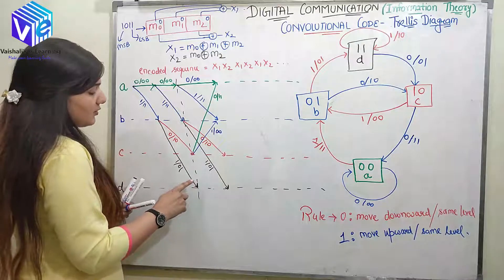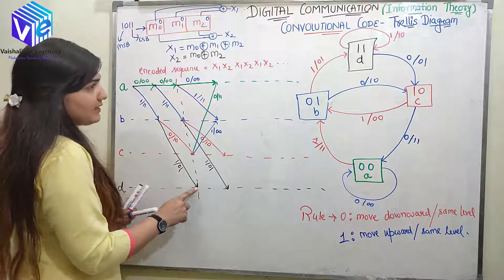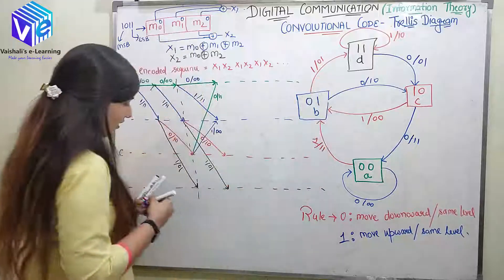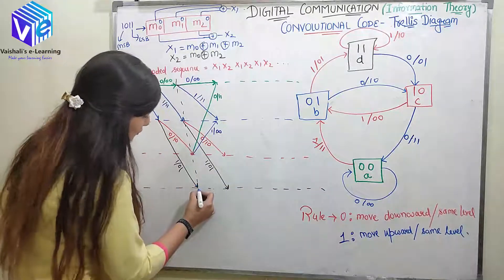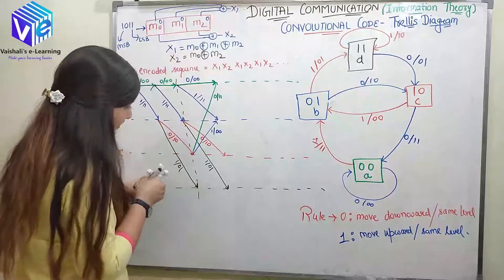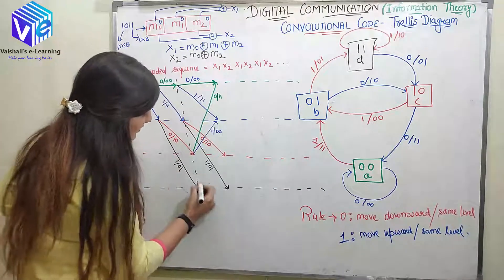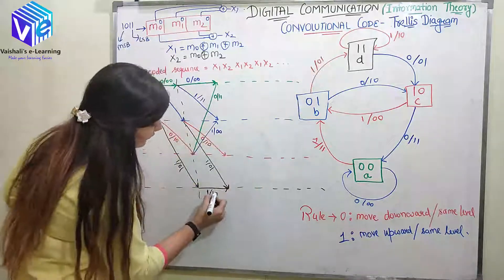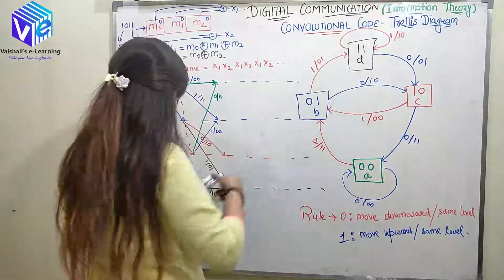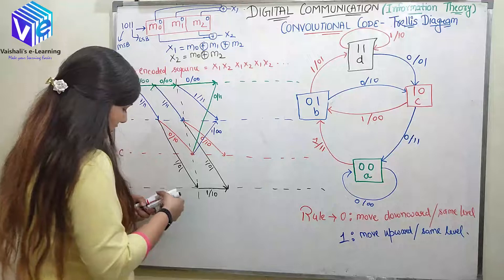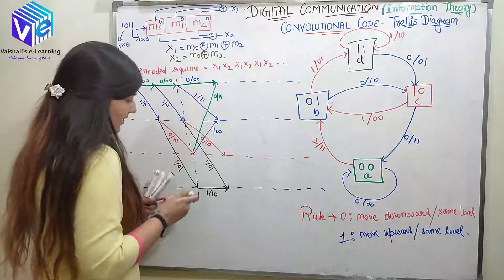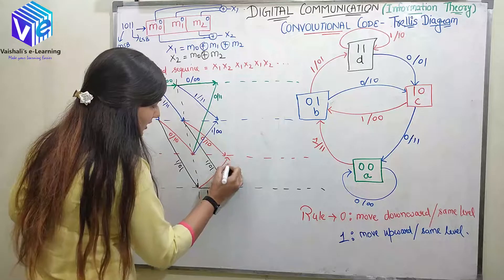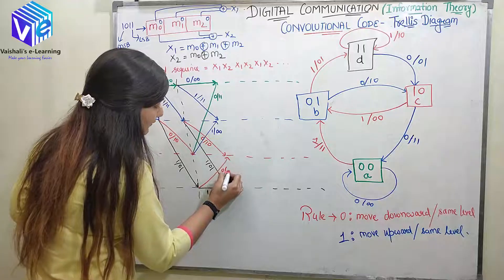At D: when input is 1, it comes back to D and the output is 10. When input is 0, it goes to C and the output is 01.